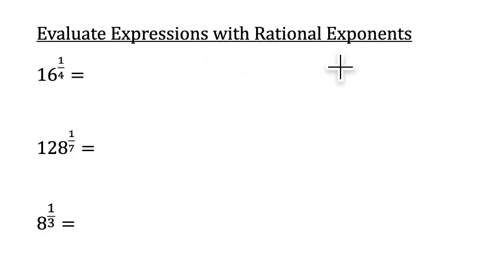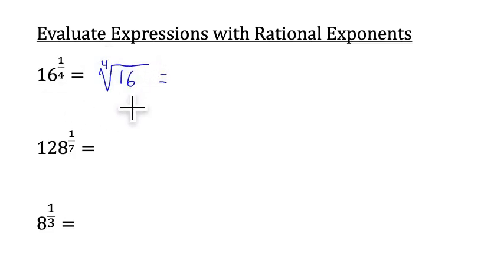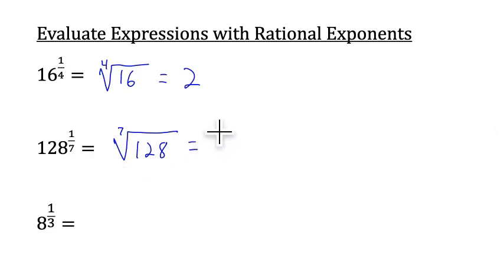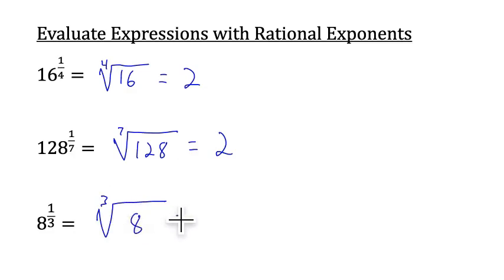Let's now evaluate expressions with rational exponents. We have 16 to the 1 4th power — you may prefer to rewrite these with radicals. This means we want the 4th root of 16, so we're wondering what number multiplied by itself 4 times equals 16. That would be 2, because 2 times 2 times 2 times 2 equals 16. Similarly, 128 to the 1 7th power is the 7th root of 128, which equals 2. And 8 to the 1 3rd power is the 3rd root of 8: 2 times 2 times 2 equals 8, so the 3rd root of 8 equals 2.